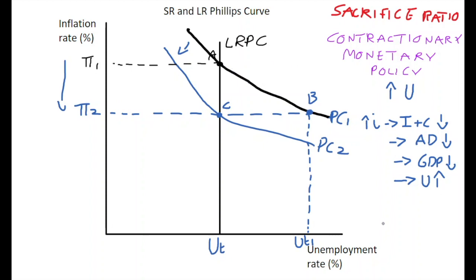From A to B is a sacrifice. The sacrifice here is that the monetary authorities will have to sacrifice an increase in unemployment in the short run, so that inflation expectations are revised in the long run and inflation can fall down.